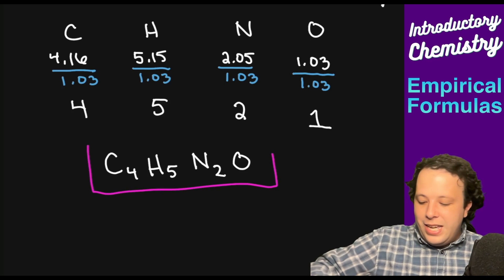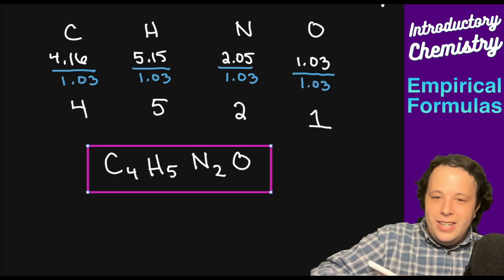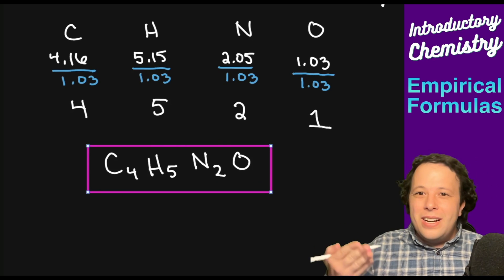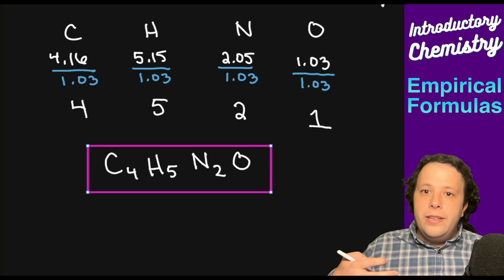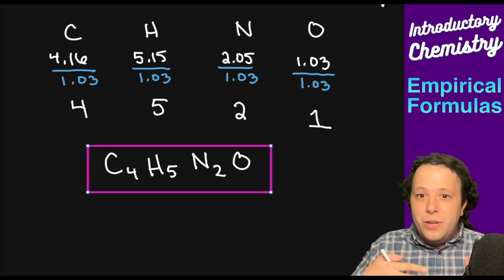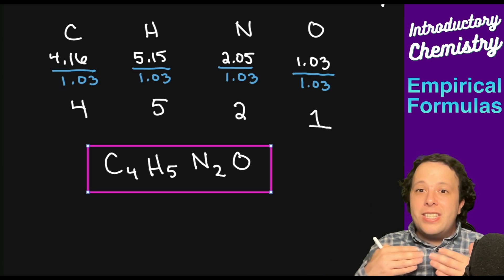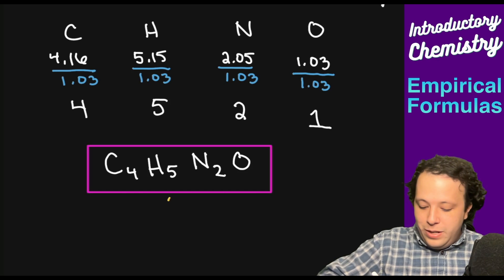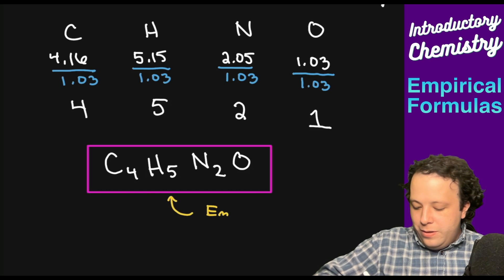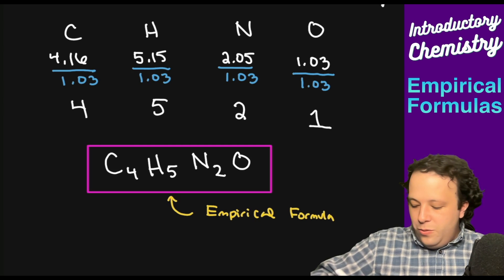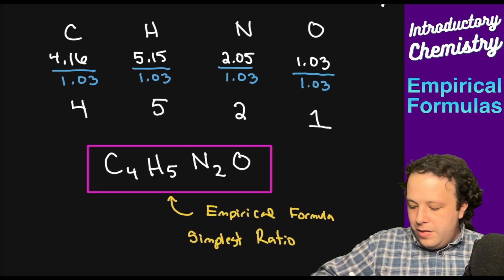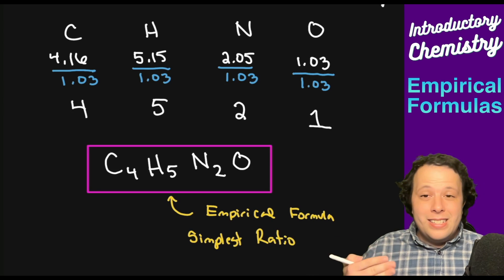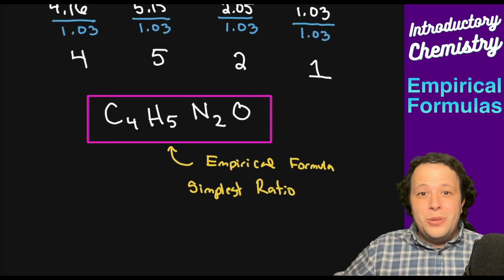When you take these values, your empirical formula is going to be C4H5N2O — and that is how to calculate your empirical formula. However, we're not done yet. I've extended this problem to a longer type, which is: what if you need to calculate the molecular formula as well? Remember, the empirical formula is just the simplest whole number value — it's not the same thing as the molecular formula. So let's go on to our next step.